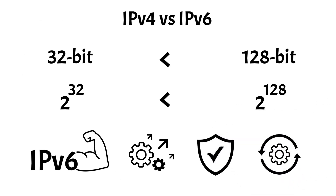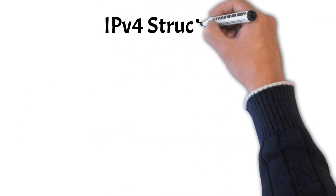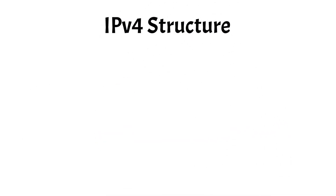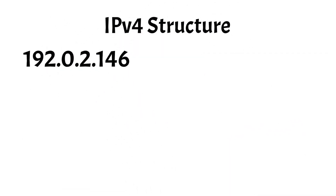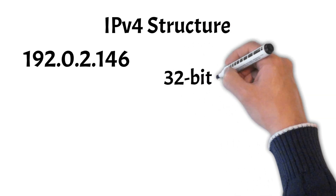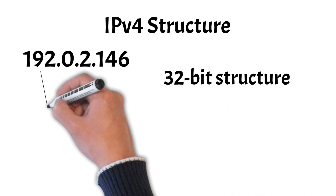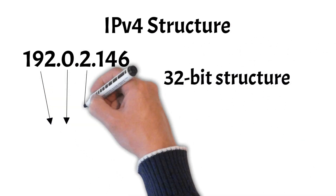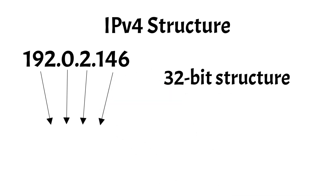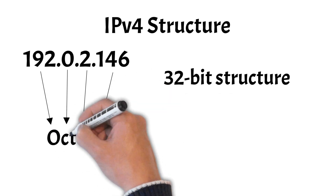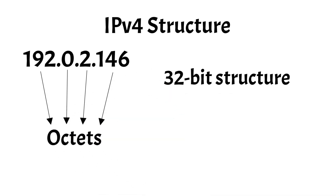Now let's further examine the structure of IPv4 addresses. IPv4 addresses have a 32-bit structure, typically represented in a dotted decimal format. This format consists of four octets separated by periods.